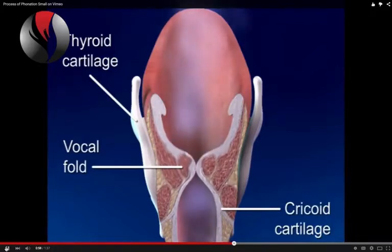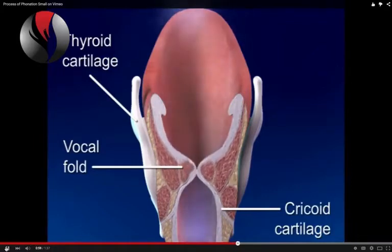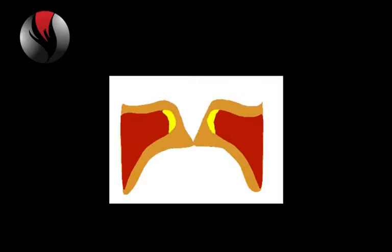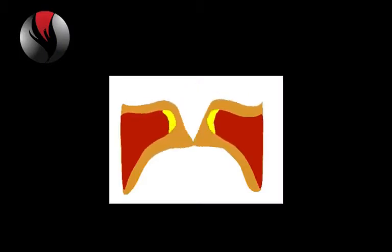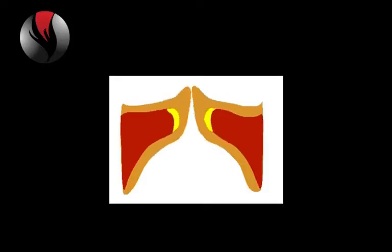The vocal cords create the initial vibrations, which are the initial tones we hear that begin the sound we make when speaking and singing. Now watch and listen as these vocal cords create the vibrations that become our voices.